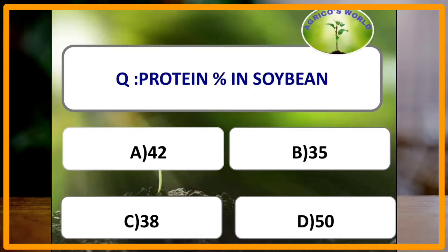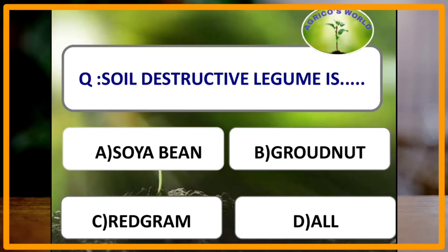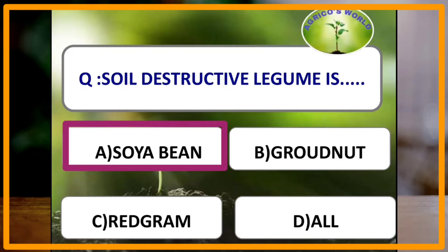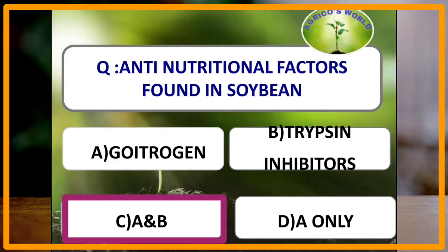Protein percentage present in soya bean is? Generally it varies from 40 to 42%, so the answer is 42%. The protein percentage in soya bean is 42% and oil percentage is 20 to 22%. Soil destructive legume is soya bean, due to phytoalexin glycolin. Antinutritional factors found in soya bean are goitrogen and trypsin inhibitors — both are the antinutritional factors found in soya bean.